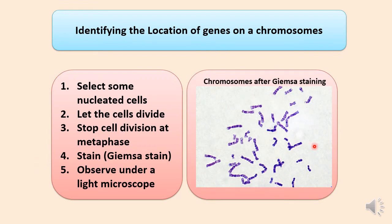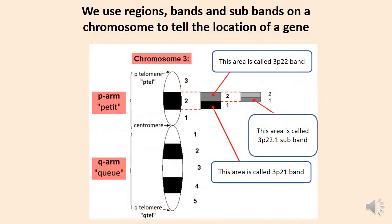Under the light microscope, the stained chromosomes will appear with alternating light and dark bands. The central constricted area is called the centromere and the two ends of the chromosome are called telomeres. The short arm above the centromere is called the p-arm and the long arm below the centromere is called the q-arm. Since this is chromosome number 3, this arm is 3p and this arm is 3q.